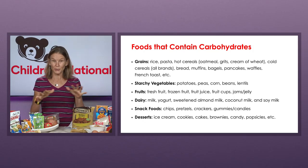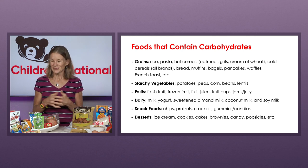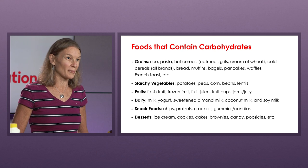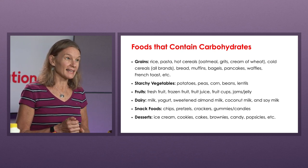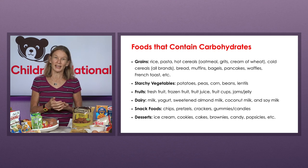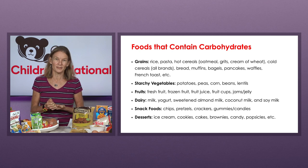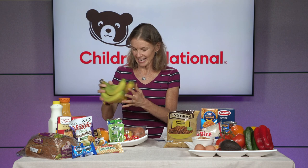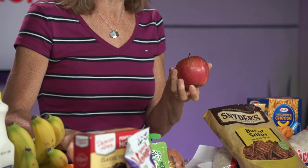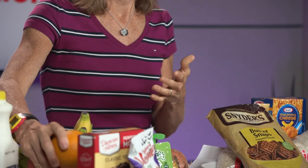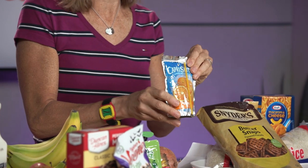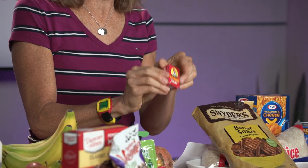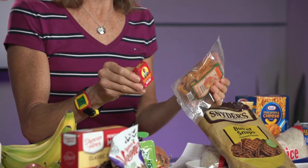Lots of foods have carbs — the majority of the foods on this table have carbs. Knowing which foods have carbohydrates is important because when you're taking insulin, foods with carbohydrates are the ones that will raise your blood sugar level. So it's important to count those carbs to know how much insulin to give. Fruits have carbs — bananas, apples, oranges, all fruits have carbs. Even fruit juices like this Capri Sun, and also dried fruit like raisins or dried mango.